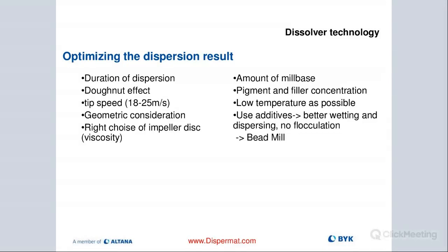Pigment and filler concentration is obviously very important — that's a formulation issue. We want to keep the temperature ideally as low as possible because we are putting in a lot of energy. By lowest possible, it's the best temperature for your product. Obviously, if it's too low, in some instances that will increase the viscosity, which is not desirable. Try to stay within room temperature. If you go too hot, that's also a concern, especially if you're running solvent-based products.